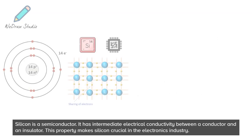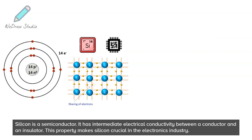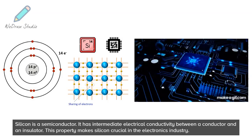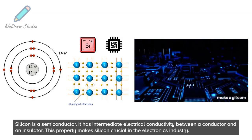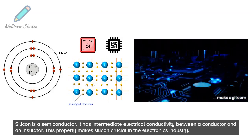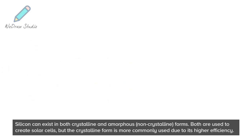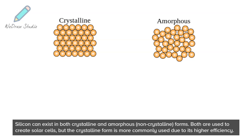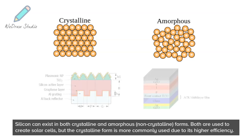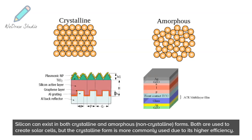Silicon is a semiconductor. It has intermediate electrical conductivity between a conductor and an insulator. This property makes silicon crucial in the electronics industry. Silicon can exist in both crystalline and amorphous, non-crystalline forms. Both are used to create solar cells, but the crystalline form is more commonly used due to its higher efficiency.